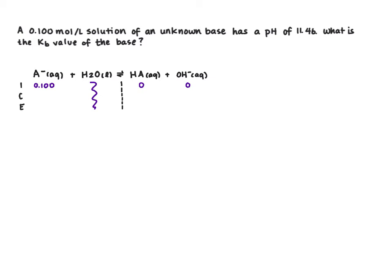We can find the concentration of hydroxide at equilibrium, as well as the concentration of our conjugate acid, because we know those two are going to be equal. We can find that using the pH.